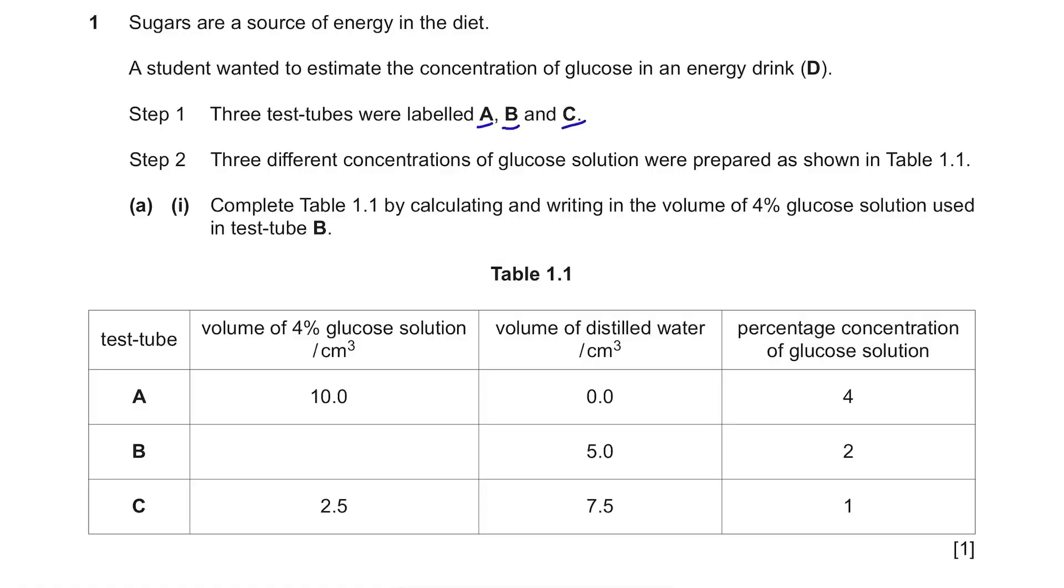Three test tubes were labeled A, B, and C. Three different concentrations of glucose solution were prepared as shown in Table 1.1. Complete Table 1.1 by calculating the volume of 4% glucose solution used in test tube B. They added certain volume of 4% glucose solution with some volume of distilled water to find the percentage concentration of the final glucose solution.